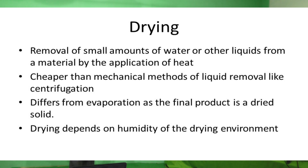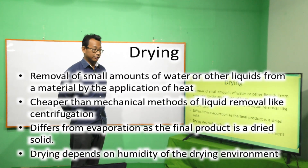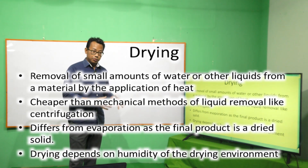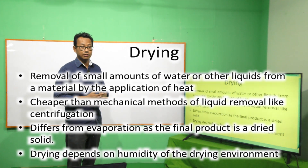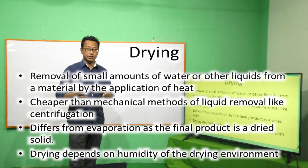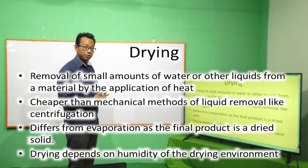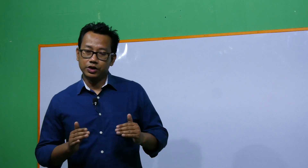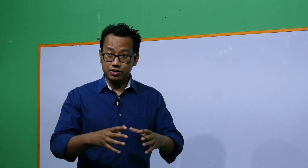In this class we will be discussing about the theoretical aspects of drying. So why is drying important? Because drying is cheaper than other mechanical methods of removal of water like centrifugation. And although evaporation and drying are almost the same, the difference is that in the case of evaporation the final product is a concentrated slurry or suspension, whereas in case of drying the final product is a dried solid.